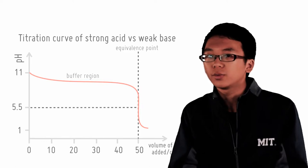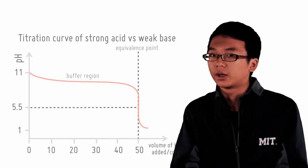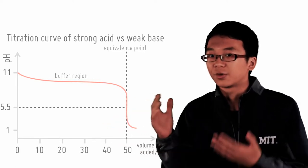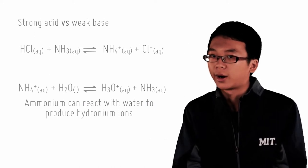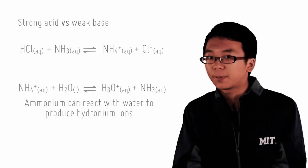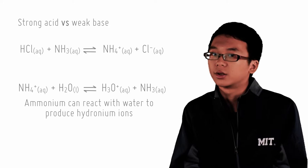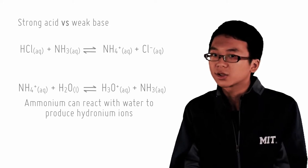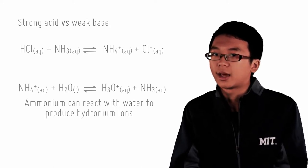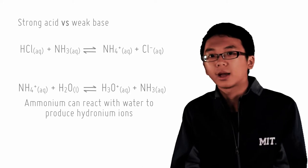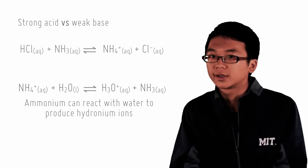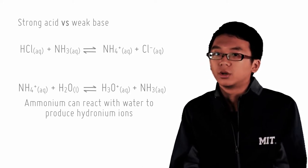And why? Here we are reacting a strong acid with a weak base, for example, HCl with ammonia, to form ammonium chloride. As we talked about in the previous lesson on salt hydrolysis, certain salts can dissolve in water to give acidic and basic solutions. Ammonium can react with water to form hydronium ions, making the solution more acidic.